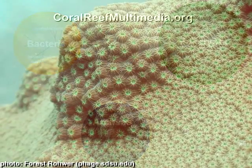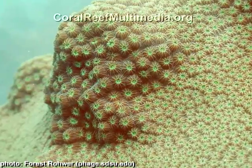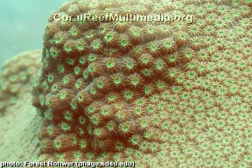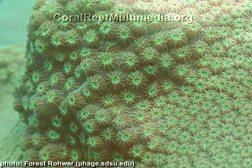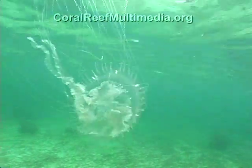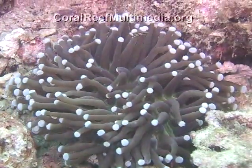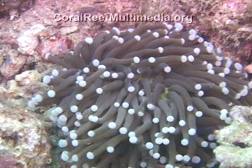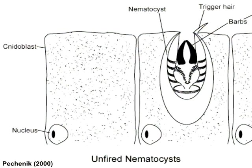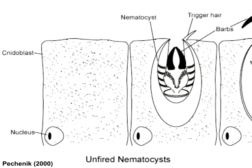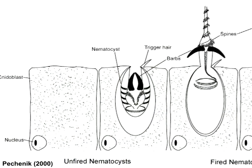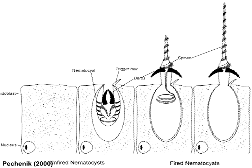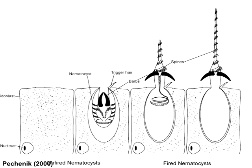Each coral colony is comprised of small, individual animals called polyps. A coral polyp is radiosymmetric and classified along with jellyfish and sea anemones in the phylum Cnidaria. This phylum is characterized by stinging cells called nematocysts — specialized cells that contain a thread-like barb that discharge and deliver a toxin for defense and prey capture.